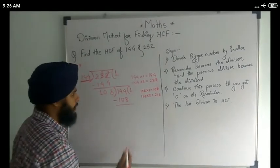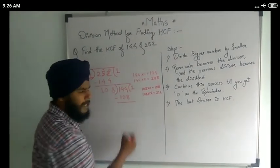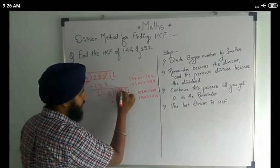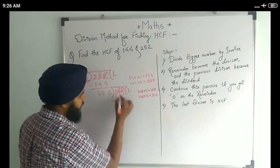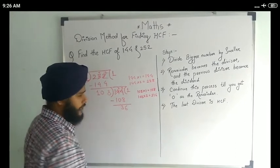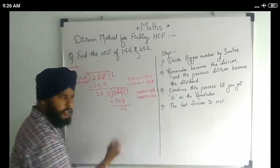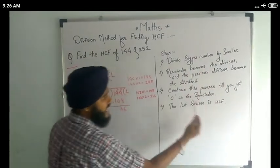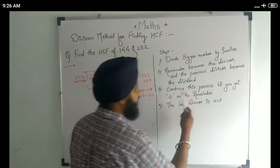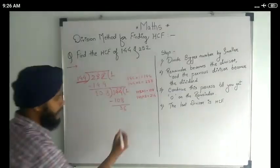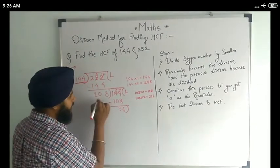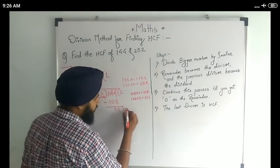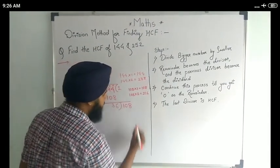When we subtract: 4 minus 8 is not possible, so we borrow one from here. It becomes 3, and subtracting gives us remainder 36. The number is not 0, so we repeat the procedure. The remainder becomes the divisor and the previous divisor becomes the dividend. So 36 is our new divisor and the previous divisor, 108, becomes the dividend.